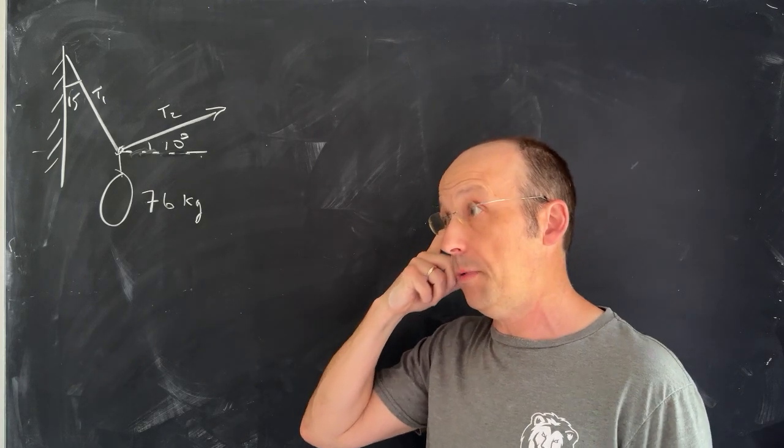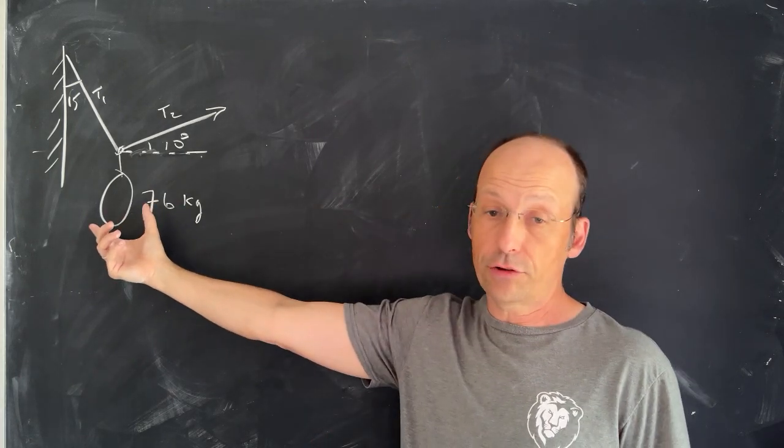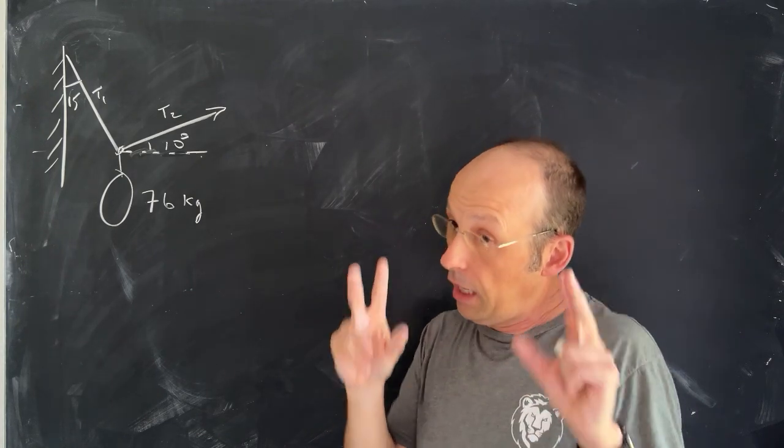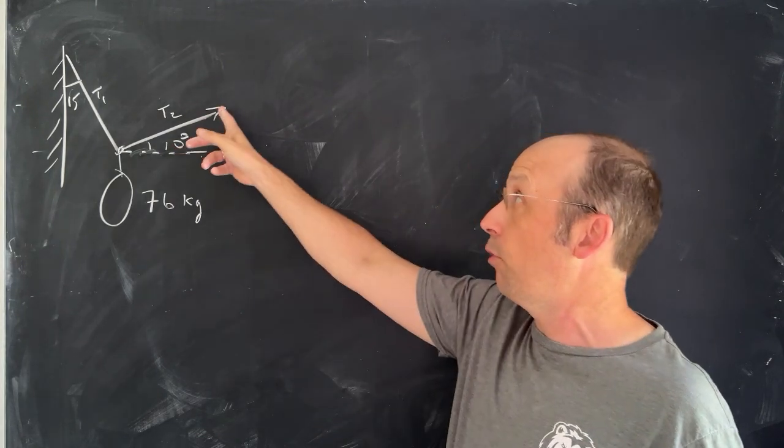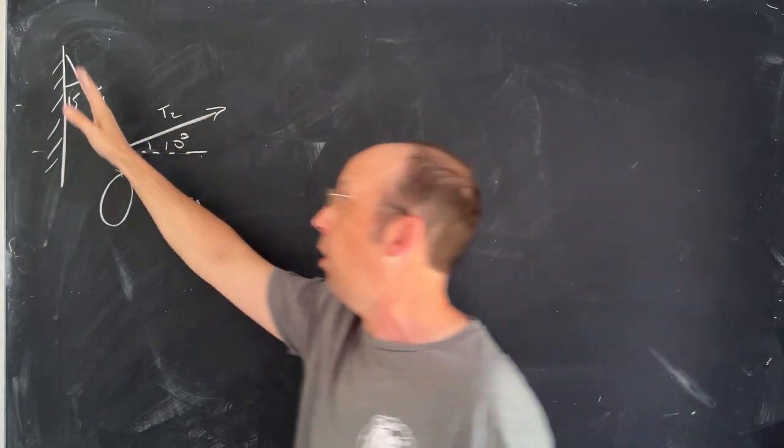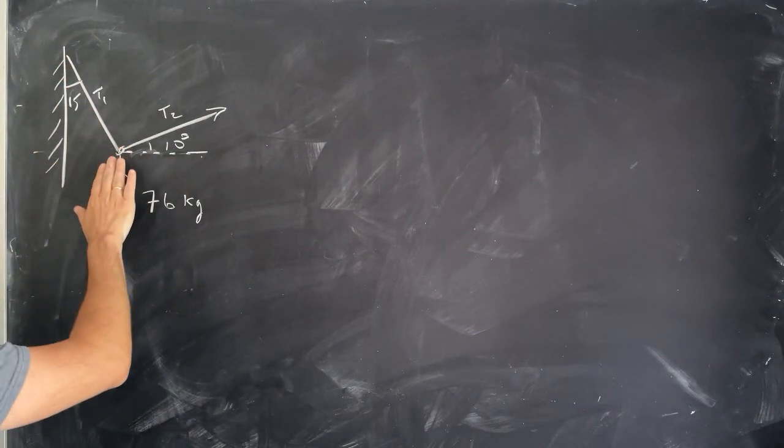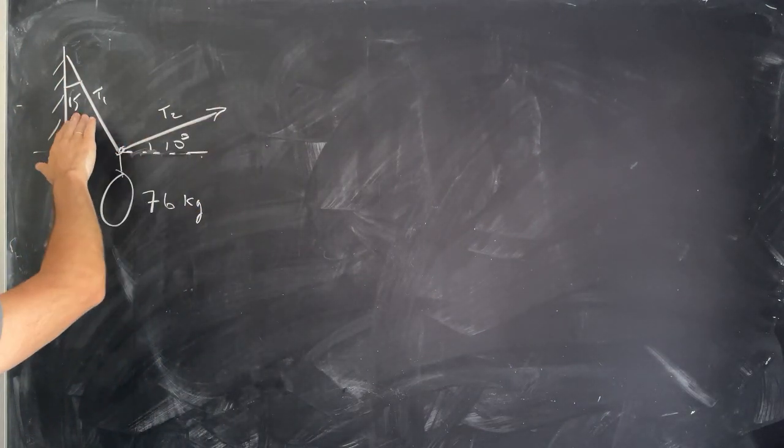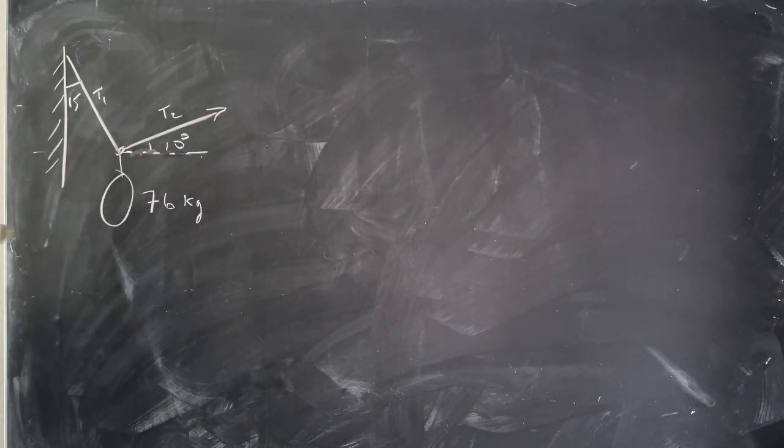So I've got a picture here with a person, that's my circular person, hanging from a rope and being pulled by a firefighter like this. So here's a wall, and there's the rope going down, rope pulling that way. 10 degrees. Find the tension in both ropes.